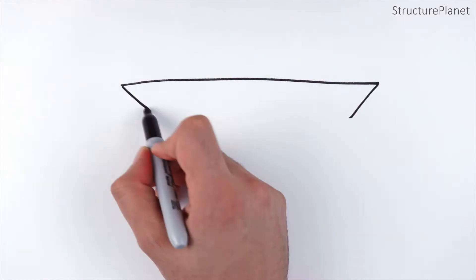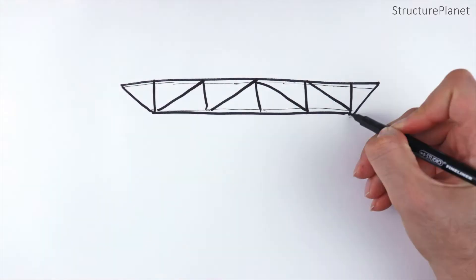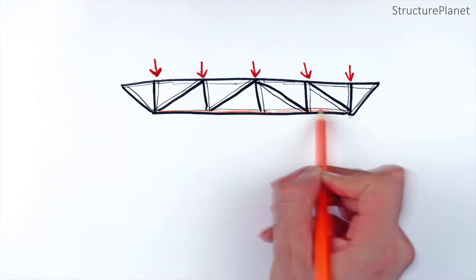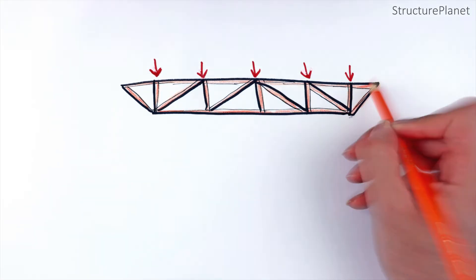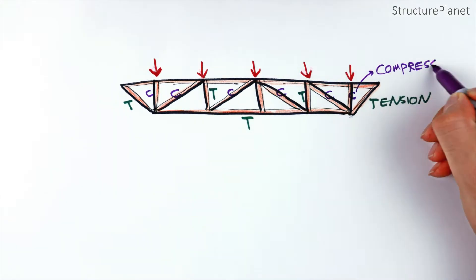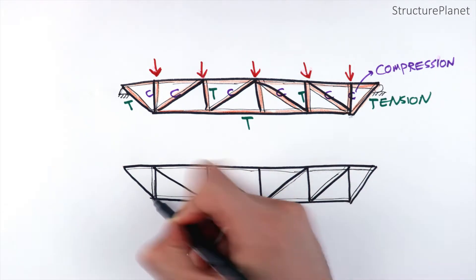Let's talk about the force distribution in trusses. Under downward loads such as the truss's self-weight, roof or floor loads, or even snow, truss top chords will be in compression, which means that the member endpoints are pushed towards each other while the bottom chords go into tension.